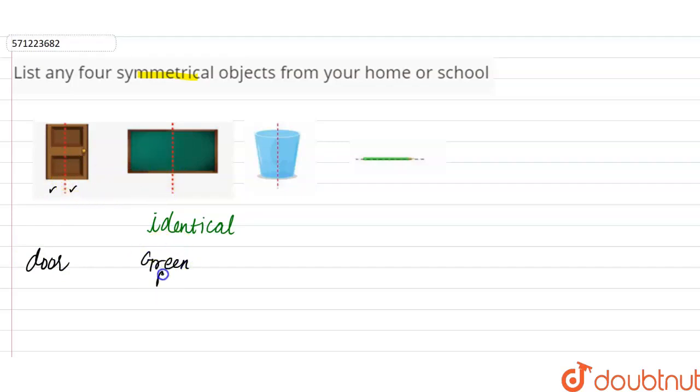Glass and pencil. These are all examples of symmetrical objects.